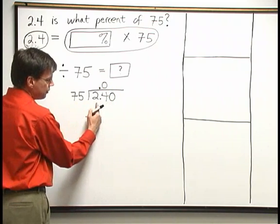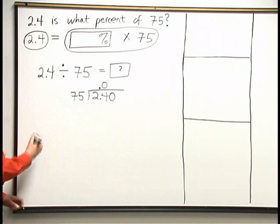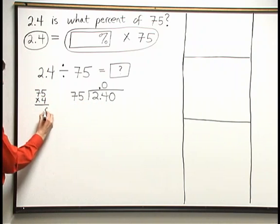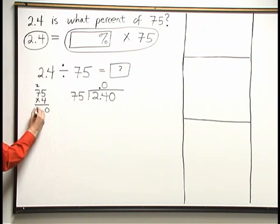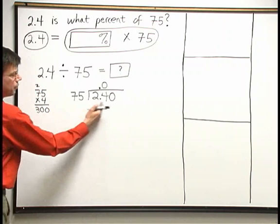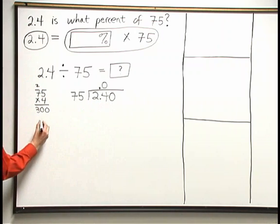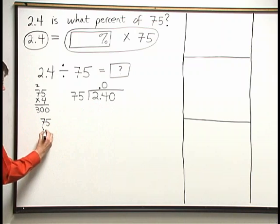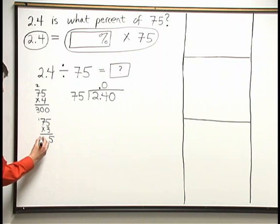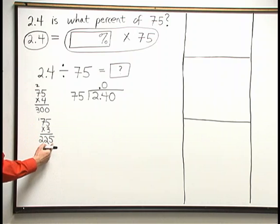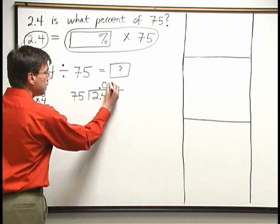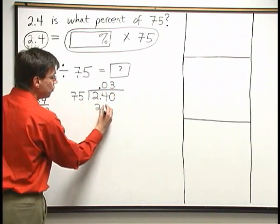Now I can add a 0 to the right of the 4. 75 does go into 240. Let's make a guess here. What about 75 times 4? 4 times 5 is 20, 4 times 7 is 28, plus 2 is 30. 75 times 4 is a little bit too large, 300. We're just trying to get close to 240 here. Let's try 75 times 3. 3 times 5 is 15, 3 times 7 is 21, plus 1 is 22. We get 225. 225 is very close to 240. That's what we want here. 3 times 75 is 225.